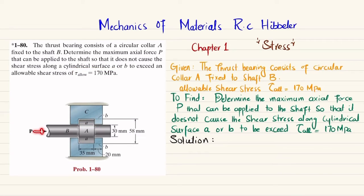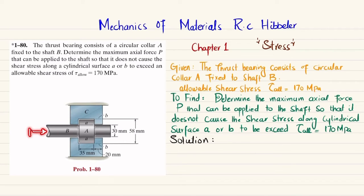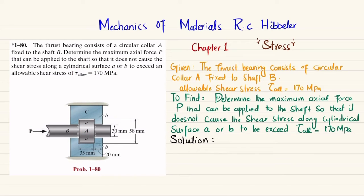Due to this force, there will be a shear that will occur at this region, because it will cause this portion to shear. And due to this axial load, it will also cause shearing in this region as well. So we will find the maximum load that can be applied so it does not exceed the allowable shearing stress of 170 megapascal. The data is already given, so let's start with the solution.